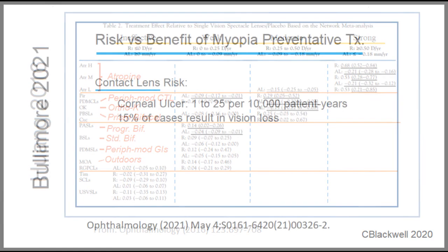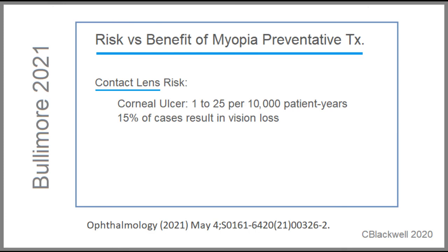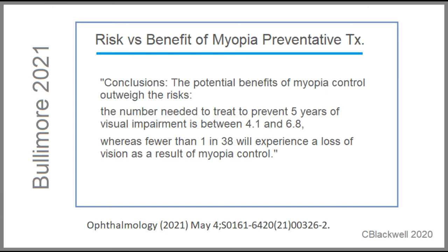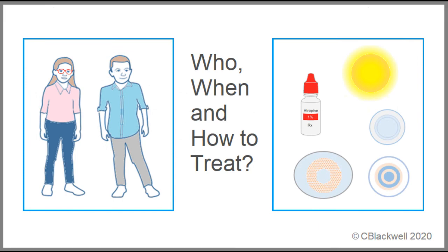What are the risks of treatment? Two methods have potential significant side effects. Contact lenses introduce the risk of bacterial infection in the cornea, which can cause scarring and reduced vision — the literature review comes up with an estimate of low risk. Atropine is low risk, as we discussed earlier. The conclusion of these authors is that the benefit of treatment in reducing vision loss outweighs the low risk of vision loss from contact lens use. Given the investment in time and effort required by these methods, it will require significant education for parents and engagement with their myopic children.